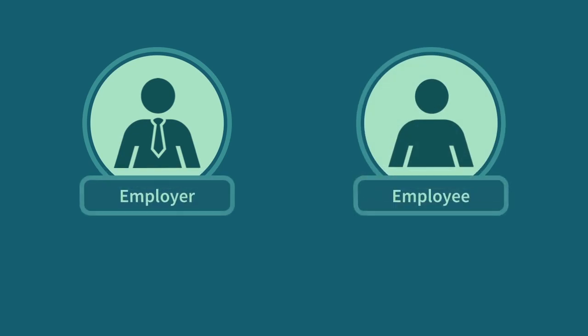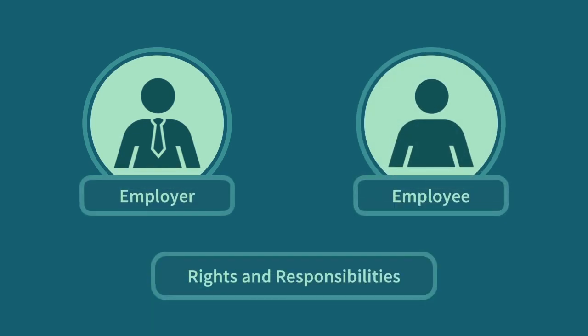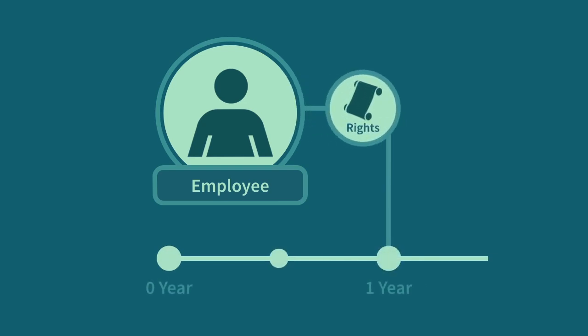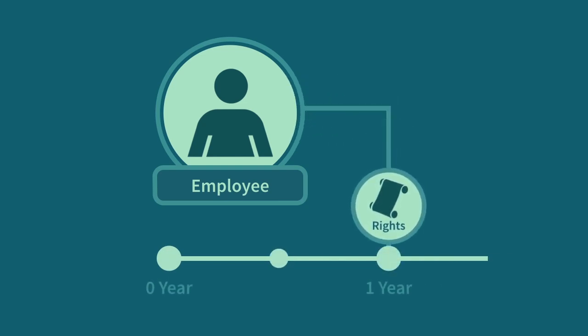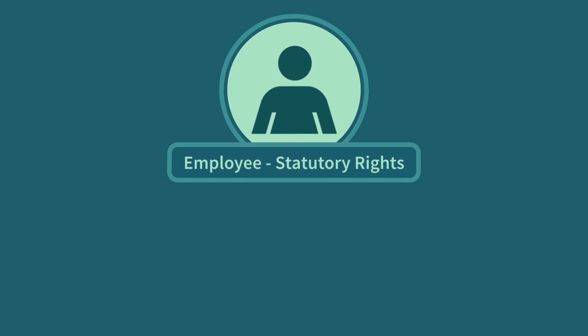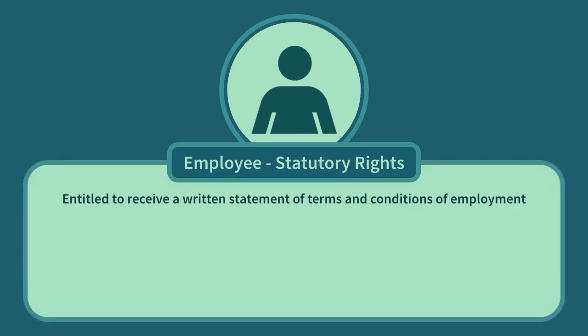Employers and employees have responsibilities to each other, and they should also expect their rights to be upheld. These rights are found through both statutory provisions and common law principles. It must be stated that sometimes an employee only gains a right when they have been employed by their employer for a certain length of time. Under Section 1 of the Employment Rights Act 1996, employees are entitled to receive a written statement of terms and conditions of employment. The statement must be provided within two months of the commencement of employment and must include certain prescribed information.